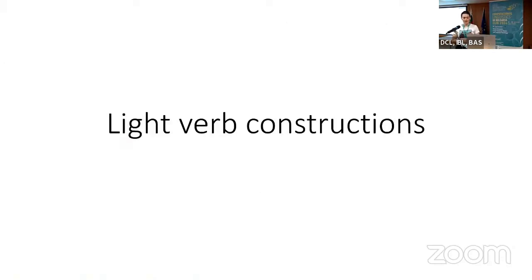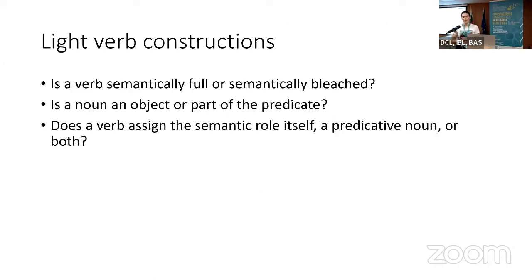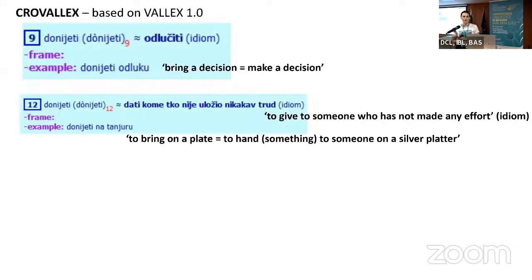Regarding light verb constructions, the situation is more complex for us because we don't know how we can be sure if a verb is semantically full or semantically bleached. Also, is a noun an object or part of the predicate? Does the verb assign the semantic role itself, does the predicative noun assign it, or both? So we also looked at valency lexicons.